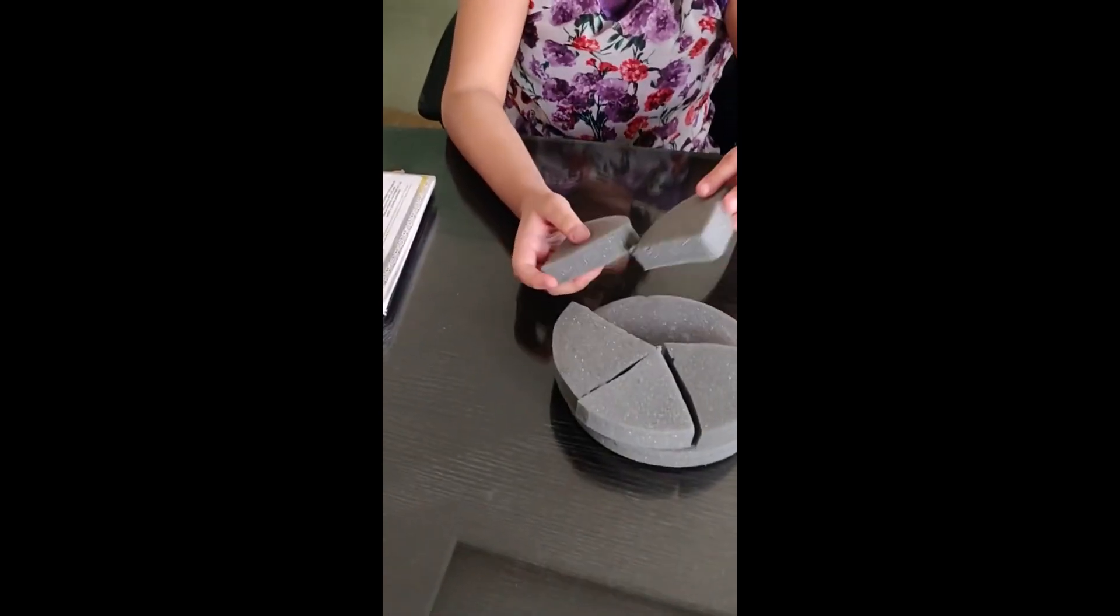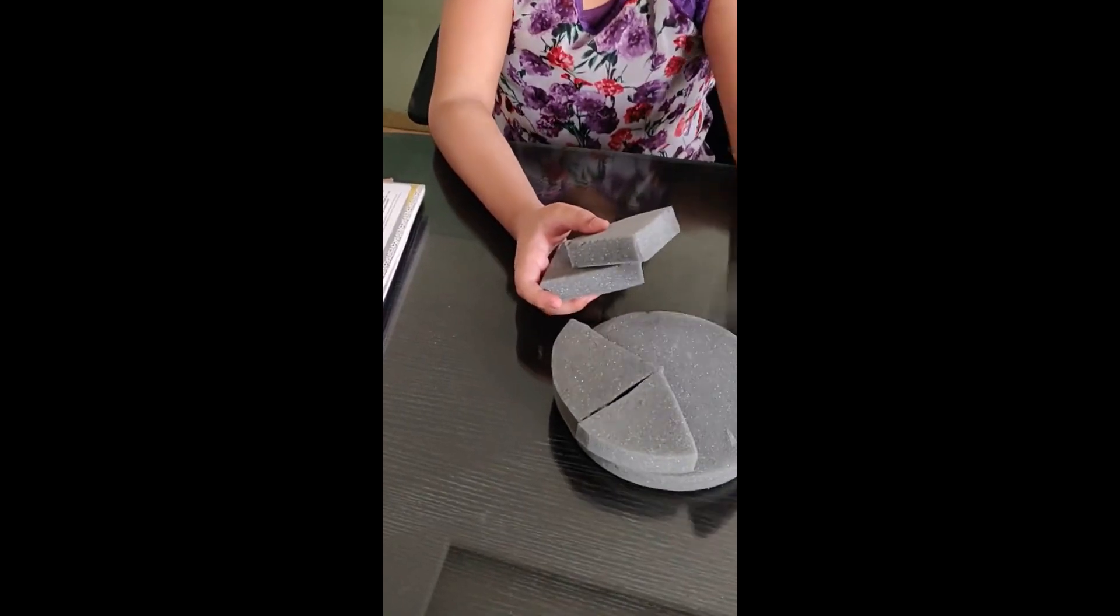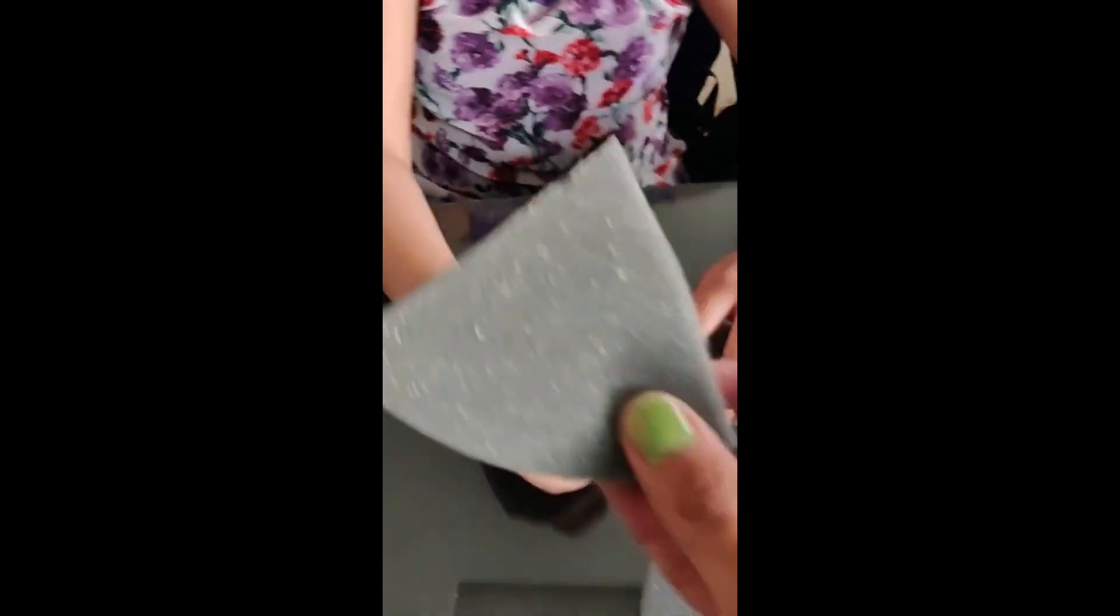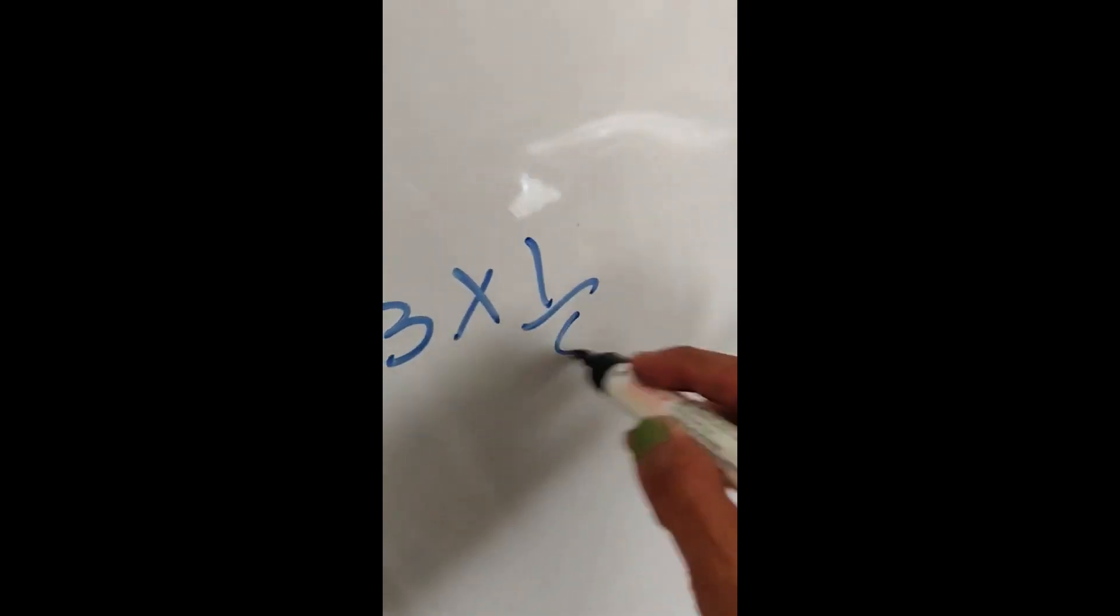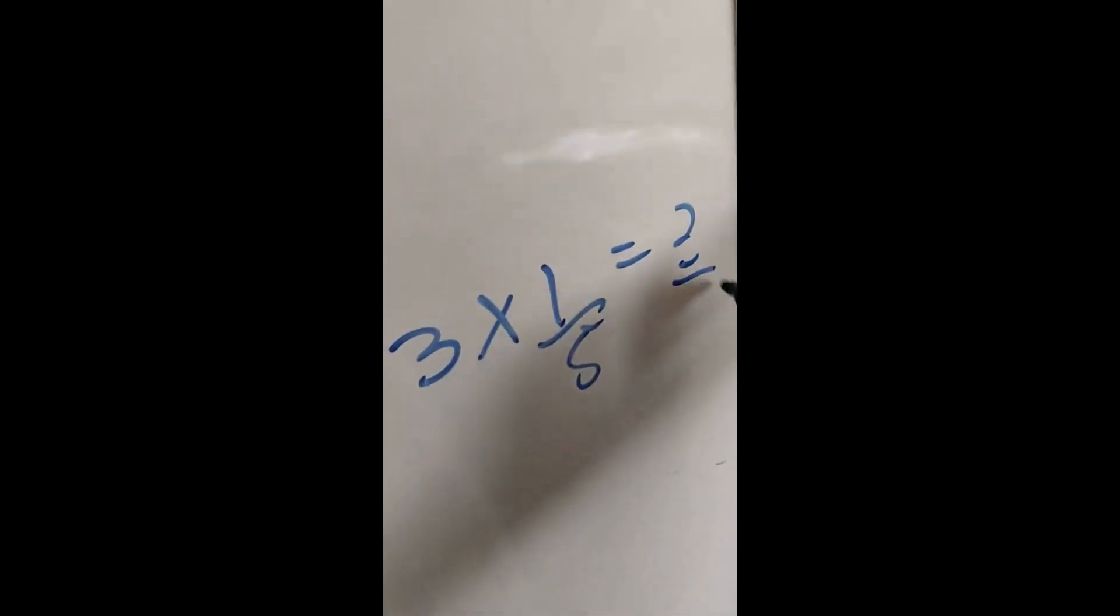Brilliant! So 3 fifth of the pizza would mean 3 pieces of 1 fifth. Show me 1 piece of 1 fifth, 2 pieces of 1 fifth. So 3 pieces of 1 fifth is 3 upon 5.